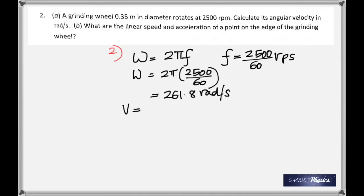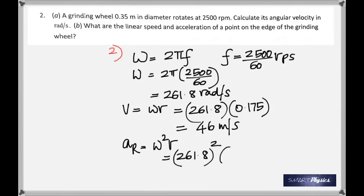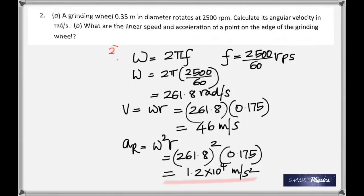That gives 261.8 radians per second. For linear velocity, the formula is v = ωr. Multiplying by the radius gives the linear velocity. Acceleration is ω²r — remember this is centripetal acceleration. That gives 1.2 × 10⁴ meters per second squared.